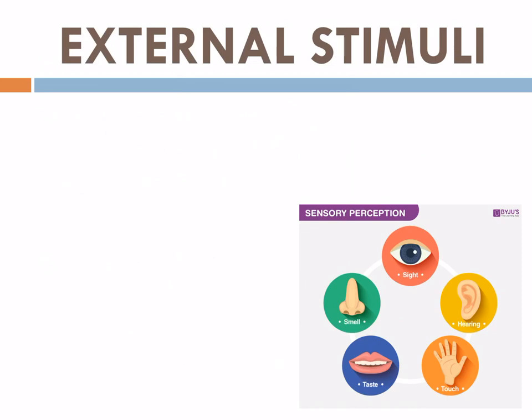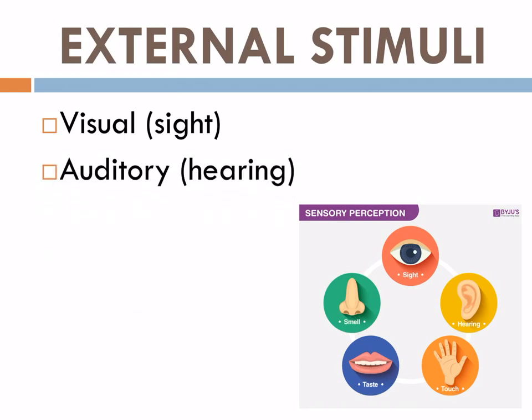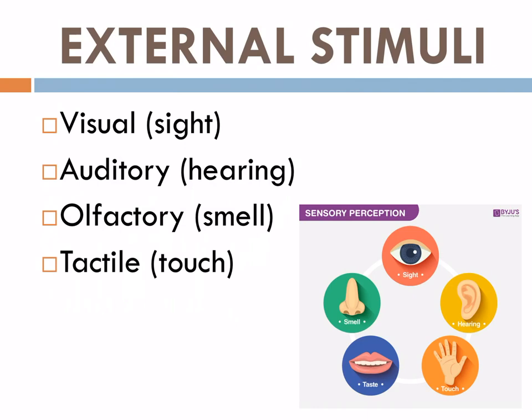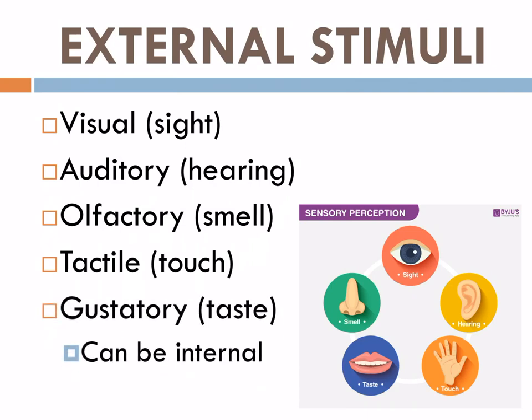We have external stimuli. External stimuli can be visual or sight — the things that you see. We also have auditory or hearing — things that you hear. Olfactory — things that you smell. Tactile or touch — things that you feel. And gustatory or taste — the one that you can taste. These all come from the outside of the body.